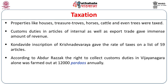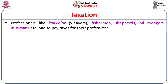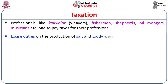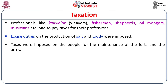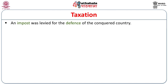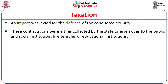Properties like houses, treasure troves, horses, cattle, and even trees were taxed. Customs duties on articles of internal and export trade gave immense revenue. A Kondavidu inscription of Krishnadevaraya gives the rate of taxes on a list of 59 articles. According to Abd al-Razzaq, customs dues were collected at several gates of the Vijayanagara city, and this collection was farmed out for 12,000 Pardaus annually. Professionals like weavers, fishermen, shepherds, oil mongers, and musicians had to pay taxes for their professions. Excise duty was imposed on the production of salt and toddy. Taxes were also imposed for the maintenance of forts and army, and an impost was levied for the defense of conquered territory.